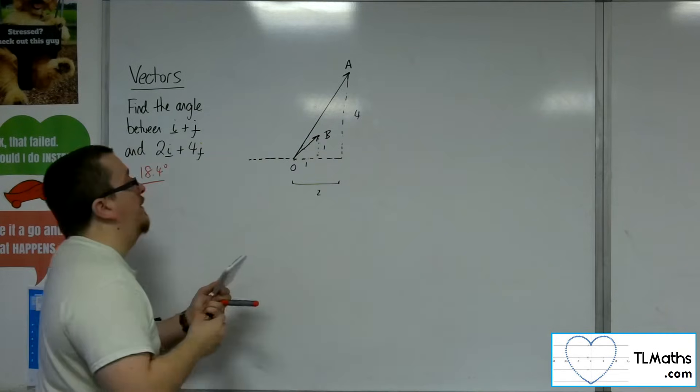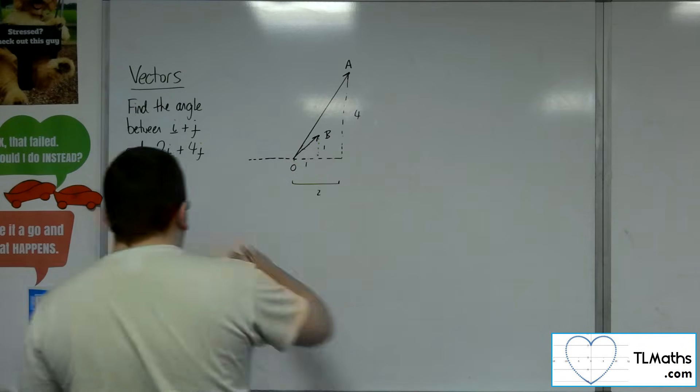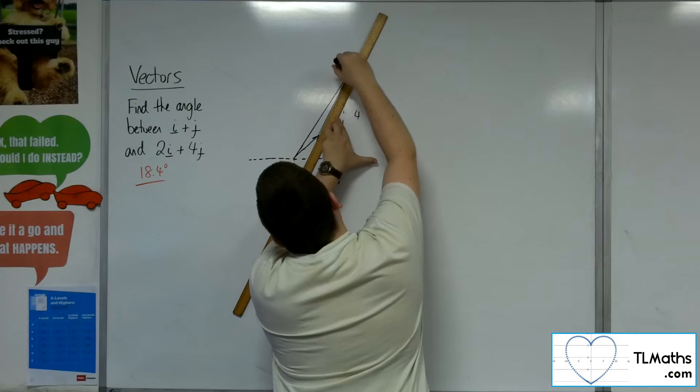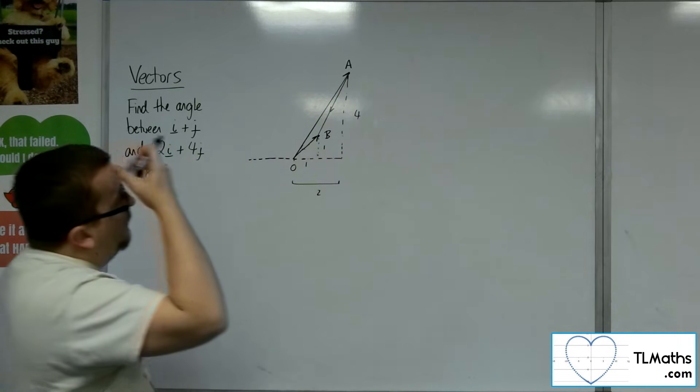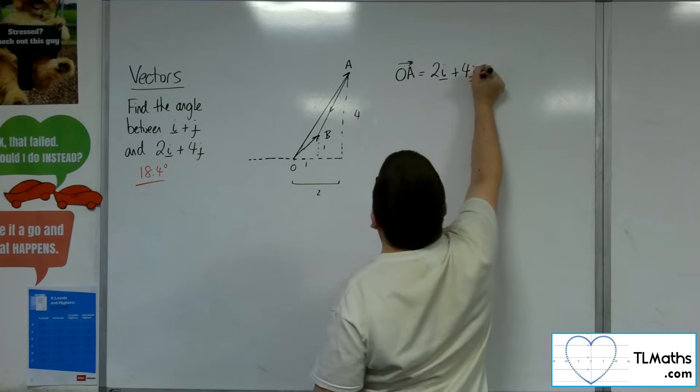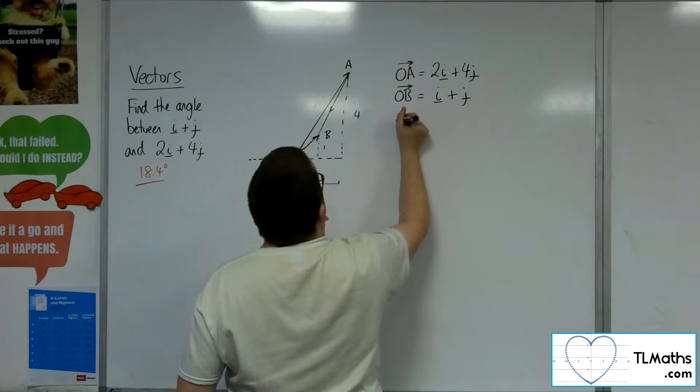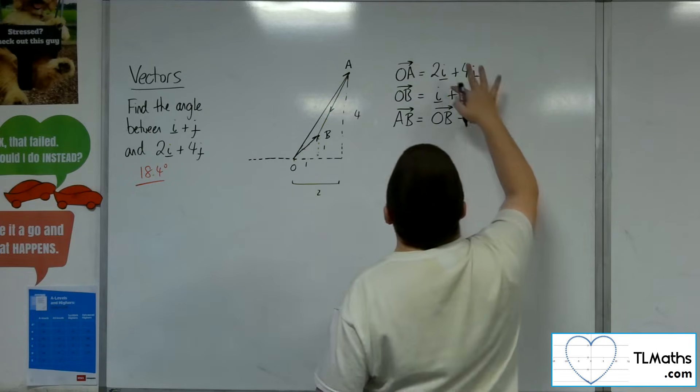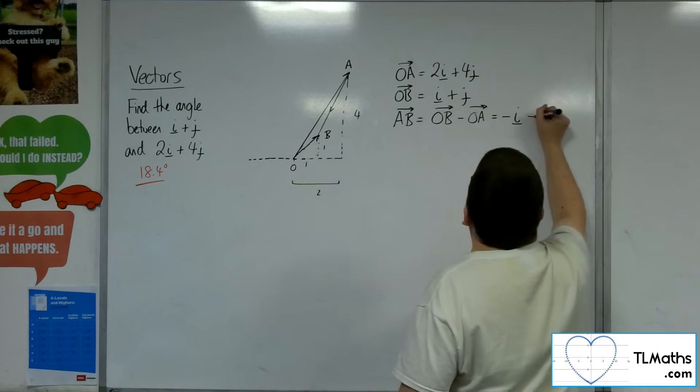So what I'm going to do is I'm going to think about this as a triangle. So I'm going to draw on this side. Like so. And that's going to be the vector A to B. So I've got OA, which is the 2i plus 4j. I've got OB, which is i plus j. And I've now got a new vector, AB. And I know how to calculate that. That's OB minus OA. And so we get i take away 2i. So that's minus i. And j take away 4j. So minus 3j.